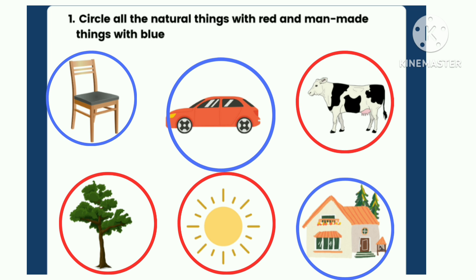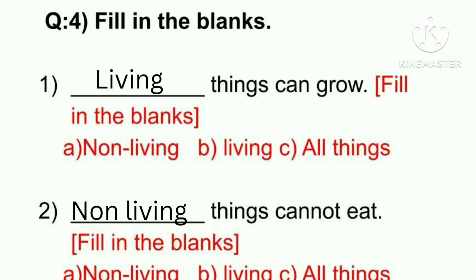Chair — a chair is made by man. Car — a car is made by man. House — a house is also made by man. So these are man-made things. Next, let's fill in: living things can grow. That's correct!